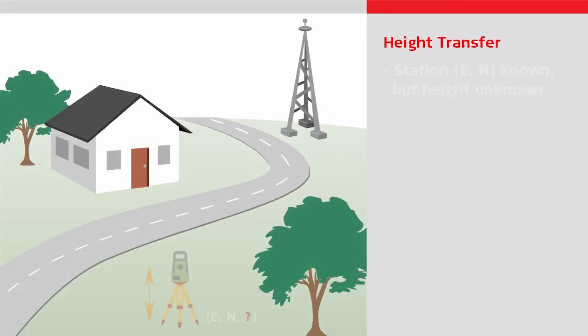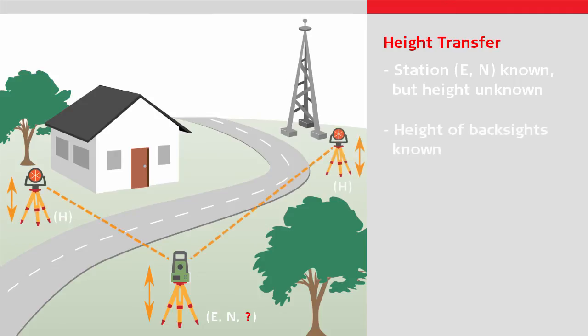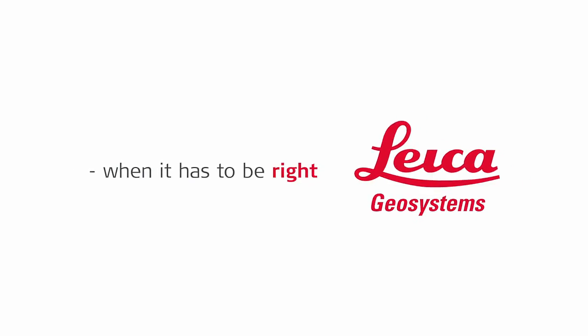So in summary, the height transfer method is the method to use when you know the point over which you will position the total station, and you simply want to compute the height of the total station based on one or more measurements to target points. Please do watch the other videos to learn more about the individual methods, and thanks for watching.